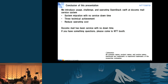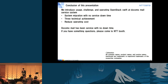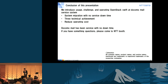In conclusion of this presentation: we introduced the usage, challenges, and operation of OpenStack Swift at Docomo Mail's service system — including system migration with no service downtime, three technical achievements, and reduced operating costs. NTT Docomo has been serving with no downtime. Do you have any questions or comments?